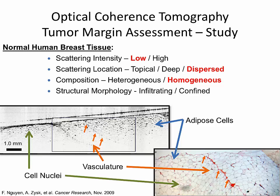In normal human breast tissue, the structure is very homogeneous — mostly adipocytes. We looked at four categories: scattering intensity, location of scattering and whether the specimen is homogeneous or heterogeneous, and how well the highly scattering intensities are infiltrated into nearby tissue versus being confined. With normal tissue we expect low scattering because adipocytes have a much lower nuclear-to-cytoplasmic ratio. Individual scatterers mostly correspond to cell nuclei, and we can see individual cell boundaries as well as some vasculature within the images.